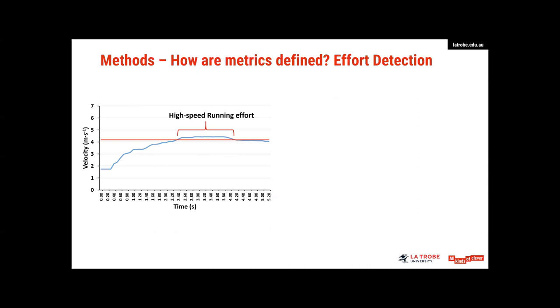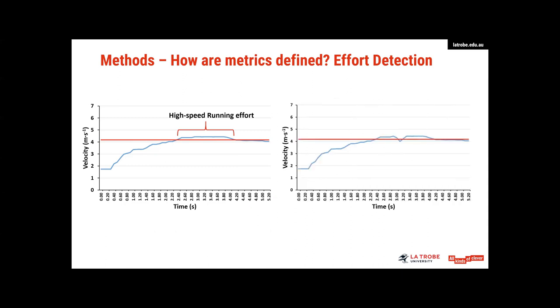So if we had a minimum duration of say 0.3 or 0.4 that we had to drop below that threshold, instead of having three separate accelerations, we'd just be reporting on one. This is also important when we start to consider our running thresholds. So if we take a high-speed running effort, you can see there only one effort detected because it's only gone above threshold for a certain amount of time.